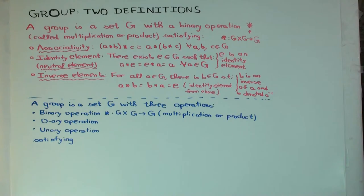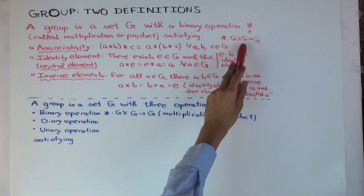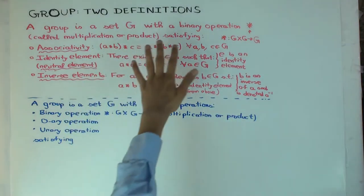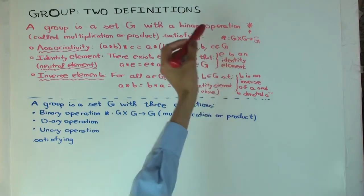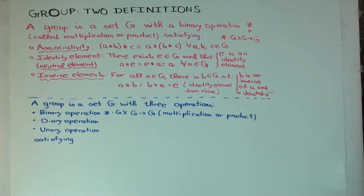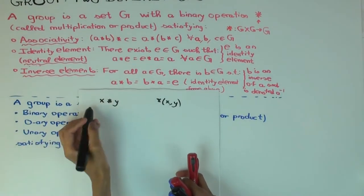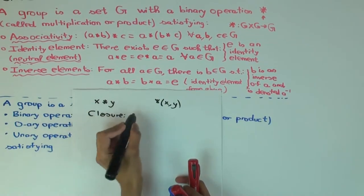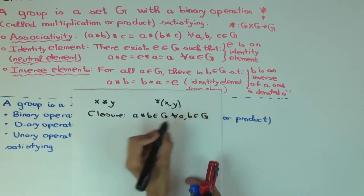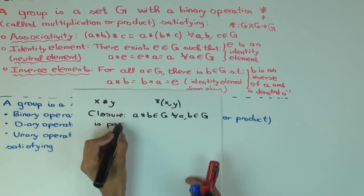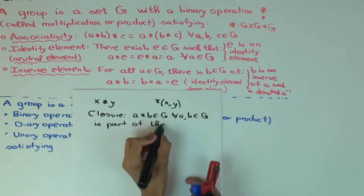There is another axiom considered part of the definition of a group which I'm not writing here, and that's closure. Closure says a star b is in G for all a, b in G — it's basically saying the binary operation is well defined. I'm not including closure separately because, the way I define binary operation, closure is already part of the definition of binary operation. So closure is true, but it's implicit.